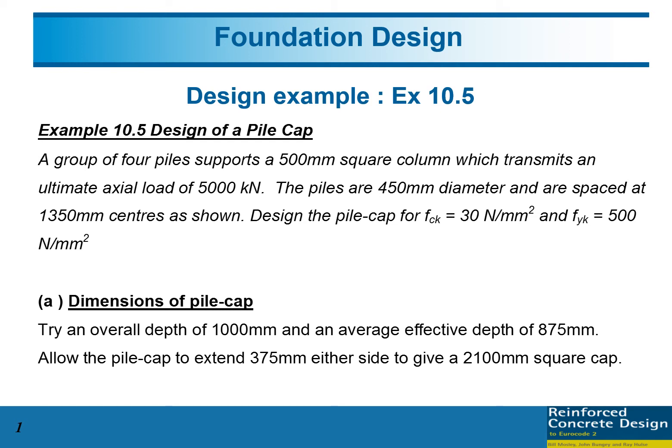This design example 10.5 involves a group of four piles supporting a 500mm square column. The column size is 500 by 500, and the ultimate axial load acting on the column is 5000 kilonewtons.